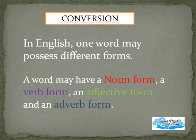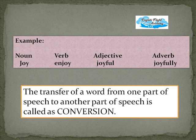What does conversion mean in English? One word may possess different forms — a noun form, a verb form, an adjective form, or an adverb form. For example, 'joy' is a noun. When we add 'en' to it, it becomes 'enjoy,' a verb. Adding 'ful' makes it 'joyful,' an adjective, and adding 'ly' gives 'joyfully,' an adverb. This transfer of a word from one part of speech to another is technically called conversion.